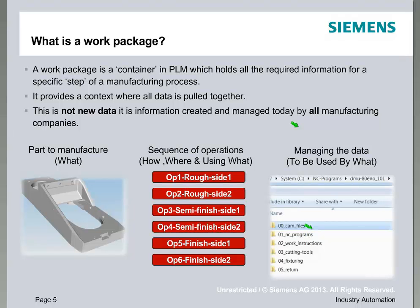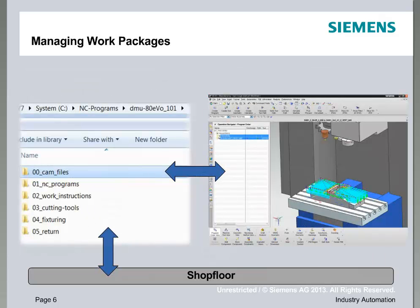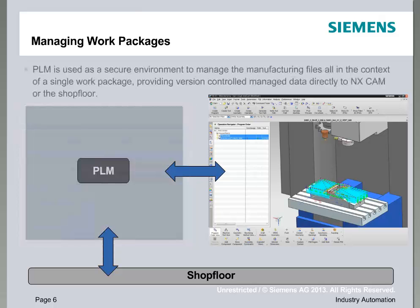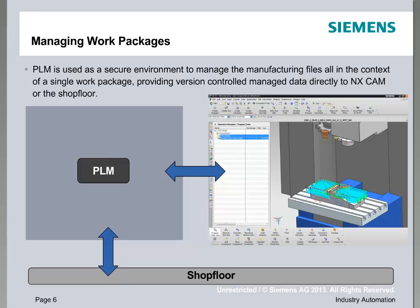As we said, it's not new data. The concept of an NC package within Siemens is really just about taking data that you have today, that you manage in a different process today, and making it more usable and more available. When we talk about managing work packages, we're really replacing that folder structure with a PLM environment that can sit in the background as a back-office application, providing a mechanism for vaulting, controlling, and managing this data.